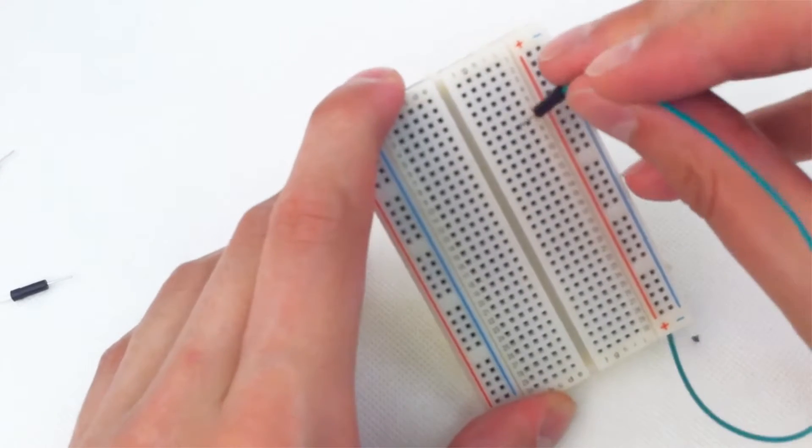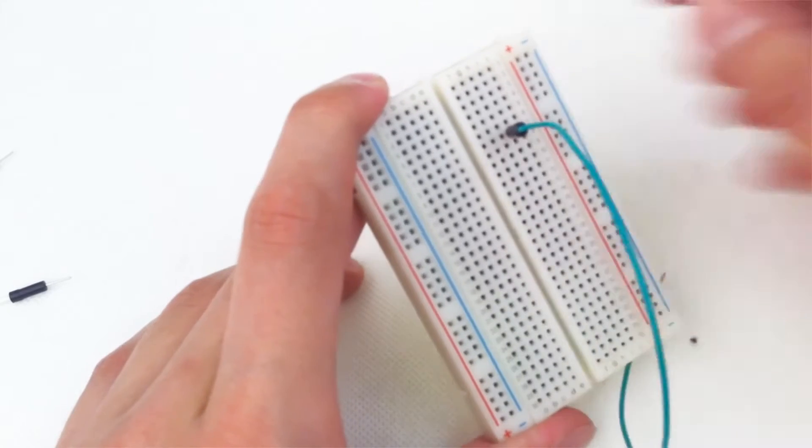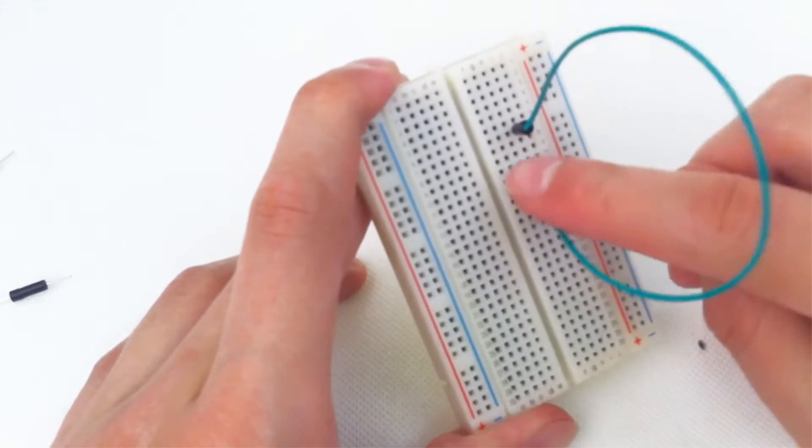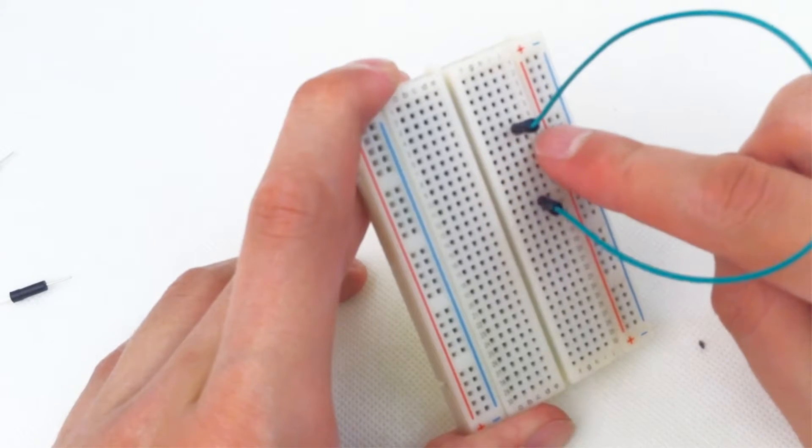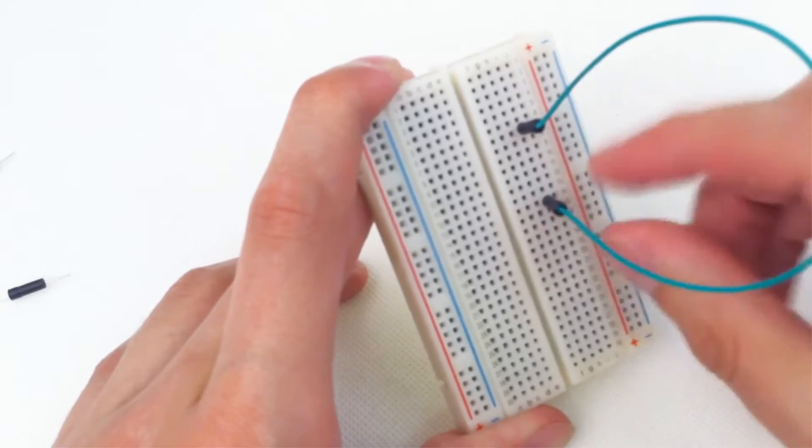If we plug our jumper wire here this set of five holes is already connected. If we plug it in here now a component or power source plugged into this set of five holes is connected to one plugged into this set of five holes and so on.